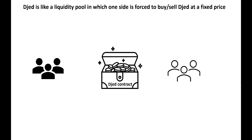Initially Coty said that the left hand side would only be available to accredited investors, i.e. rich people, but they subsequently backed away from that and recently announced that anybody can be a liquidity provider — just like anybody can be on the right hand side and be a stablecoin holder. For the purposes of this presentation I'll refer to the left hand side as liquidity providers and the right hand side as stablecoin holders, which are more likely to be people like you and me.